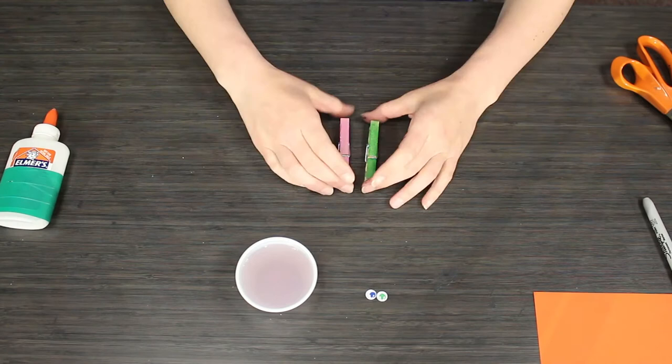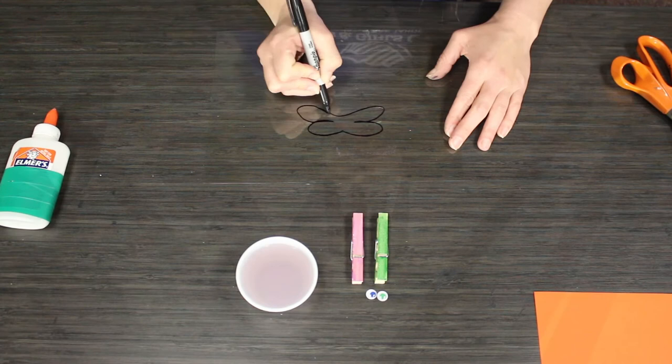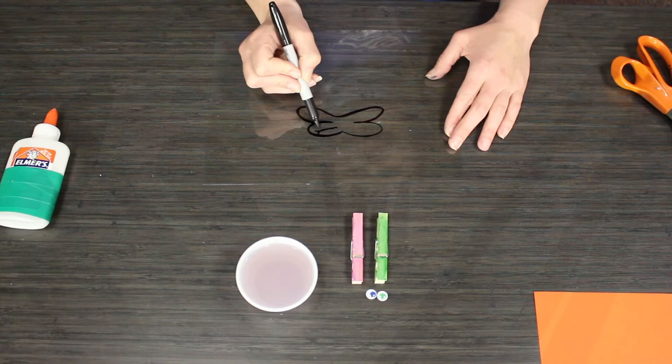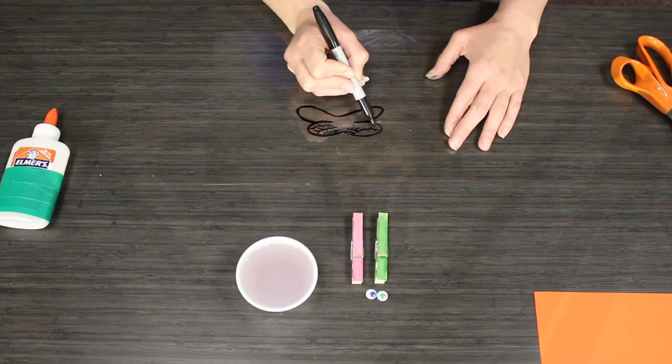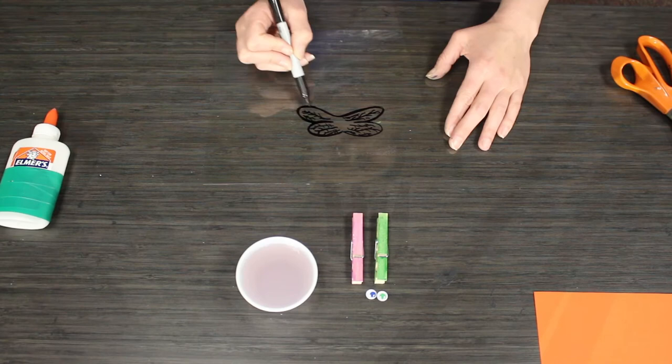The next step is to make the wings. There are two options. Option one is the see-through wings. Draw two pairs of wings on transparency film or the plastic film in the activity pack using a permanent marker. Draw lines that branch out from the center of the wings.